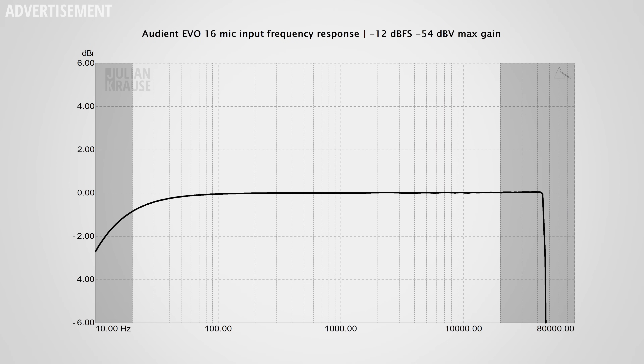Let's check out audio quality with some measurements. I'll mainly show measurements from the Evo 16, but unless I say otherwise they are exactly the same for the SP8. With so many mic inputs, let's look at them first. The frequency response should be flat for an uncolored sound, and that's exactly what we see even at maximum gain — the worst case scenario. There's only about 1 dB rolloff at 20 Hz, which is inaudible in practice — a really good performance.